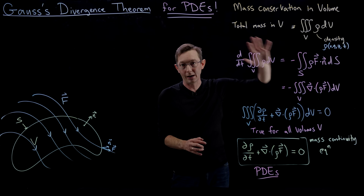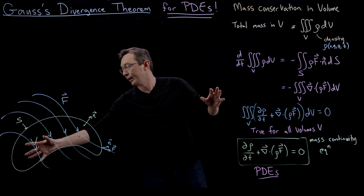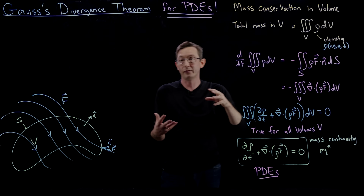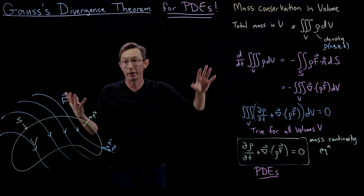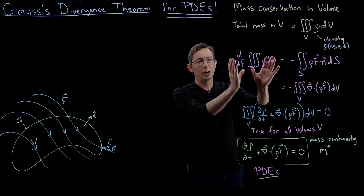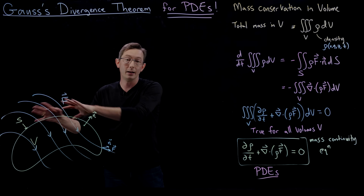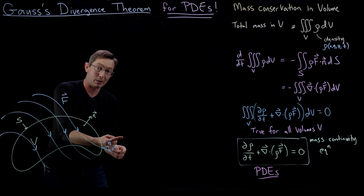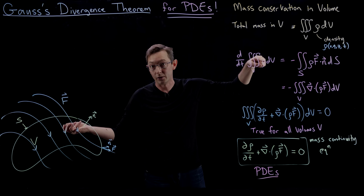We used Gauss's theorem in the last lecture to derive the mass conservation continuity partial differential equation, assuming we have some fluid flow carrying mass with some density rho. Rho is the density of the fluid in all of space and time — it's a scalar function — and this vector field f is moving mass around, like air or water in the atmosphere or in the ocean. The total rate of change of mass in the volume equals the amount of mass being carried in and out of that volume by the fluid.